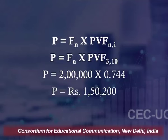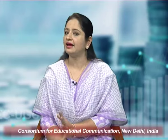This means if this person invests approximately rupees 1,50,000 today at 10 percent for 3 years, he will receive rupees 2 lakh at the end of the third year. This is how we use discounting to calculate the present value of a single cash flow.